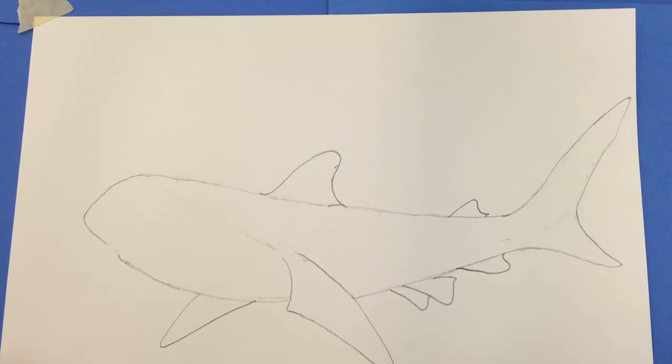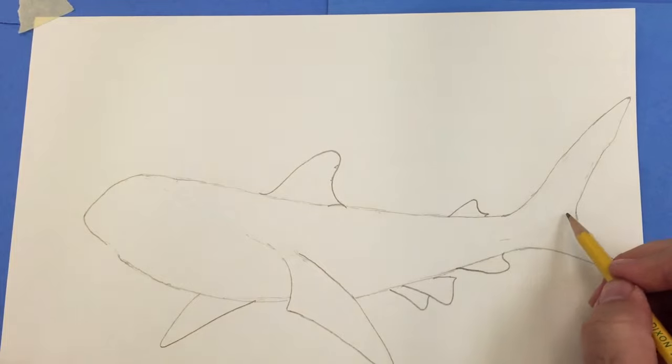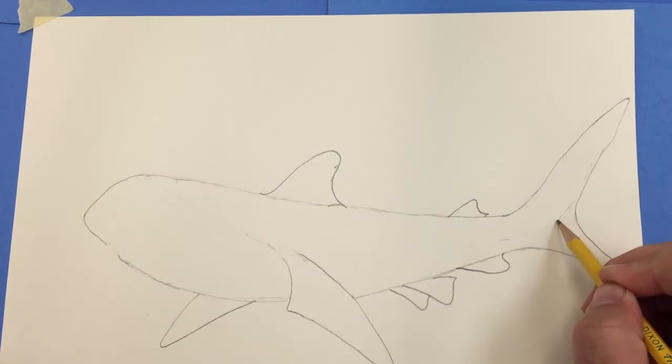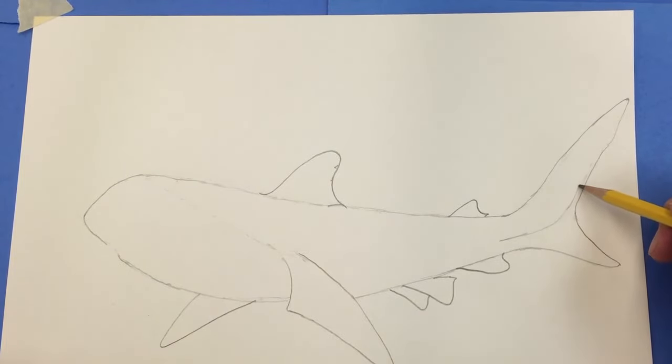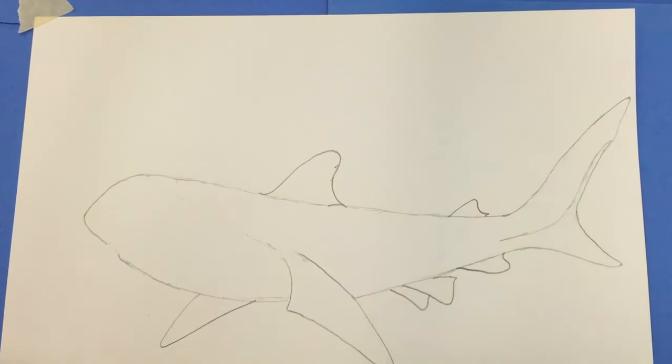The next thing I'm going to do is add this line right here, which continues up to this part of the tail. Another part of the shark's body that helps stabilize it.